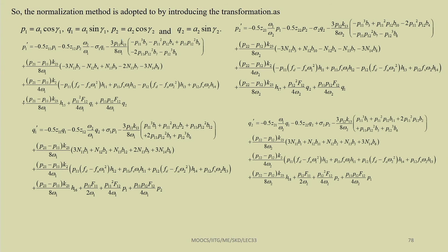For finding the stability of the trivial state, convert to normalized form: p₁ = a₁cos(γ₁), q₁ = a₁sin(γ₁), p₂ = a₂cos(γ₂), q₂ = a₂sin(γ₂). This reduces the system to equations for p₁′, q₁′, p₂′, and q₂′.